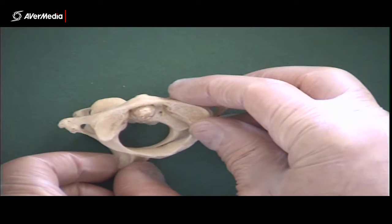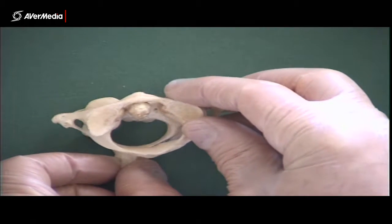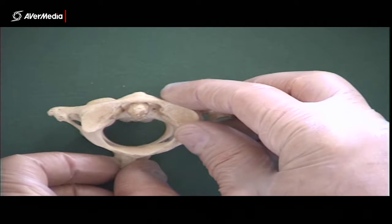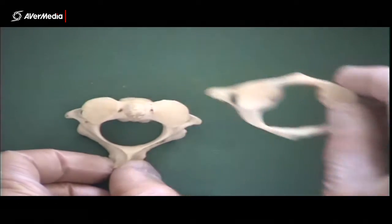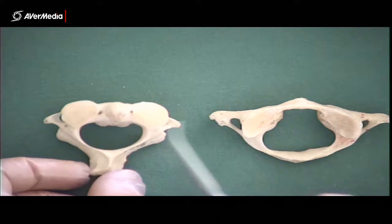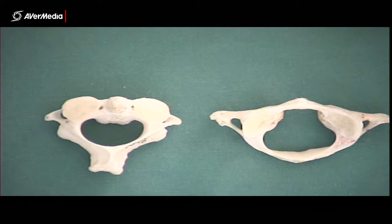And that is the bony material, or the skeletal material, that should have been the body of C1, but that allows us to turn our head from side to side and indicate no. So that's C1 and C2, or atlas and axis.